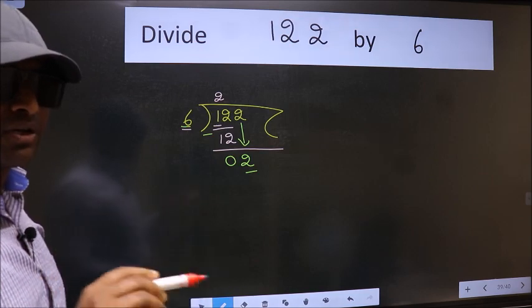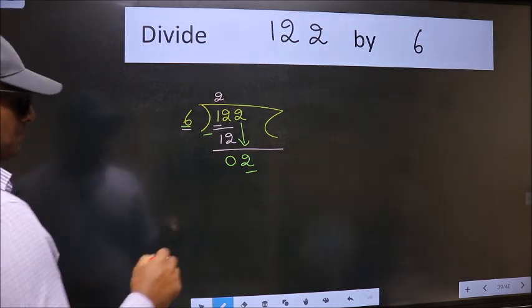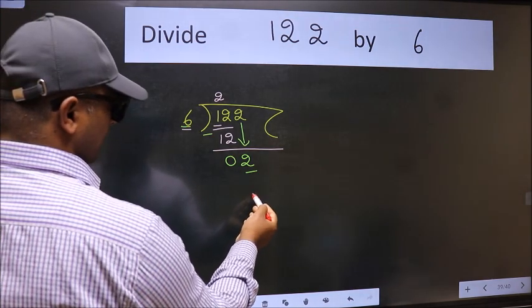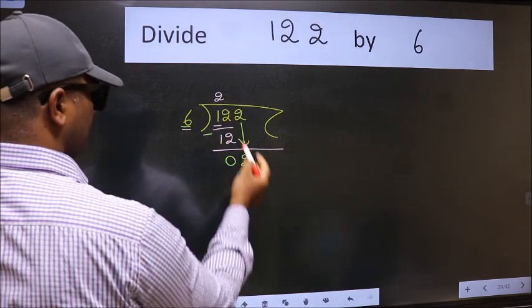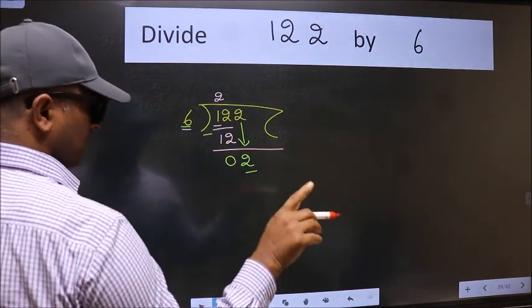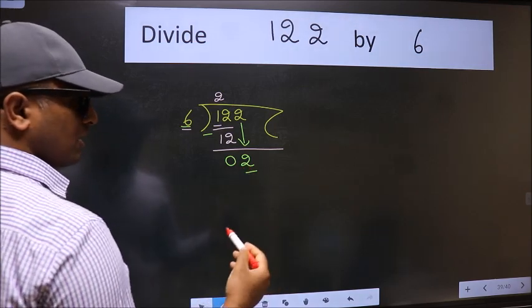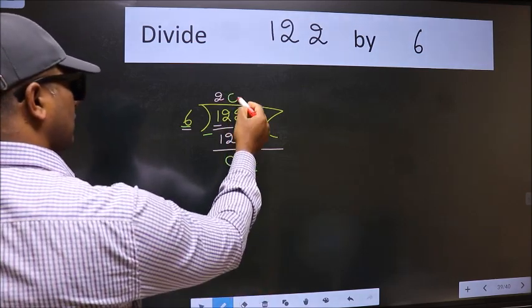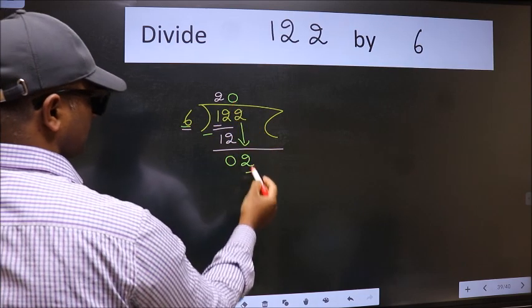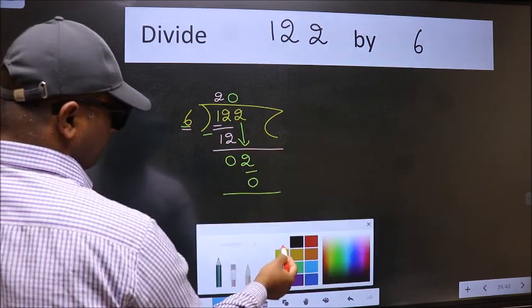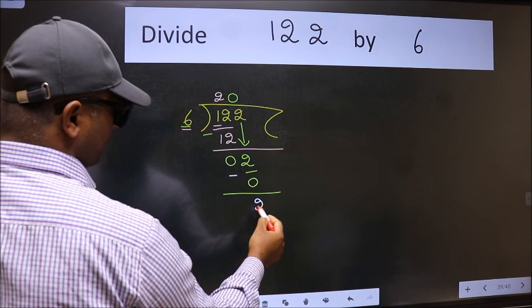Instead of that, what you should think of doing is: which number should we take here? If I take 1, we will get 6, but 6 is larger than 2. So what we do is we take 0 here. So 6 times 0 is 0. Now we subtract.